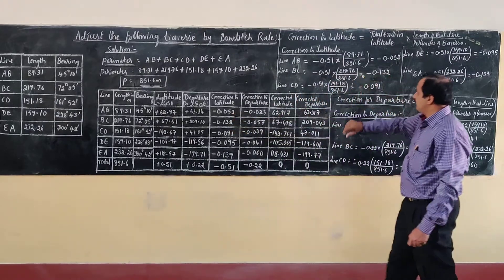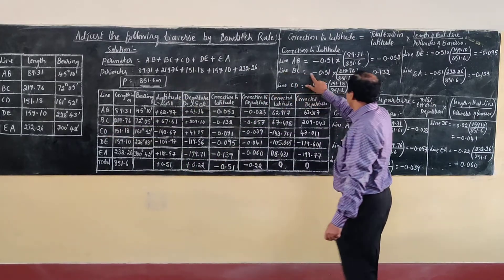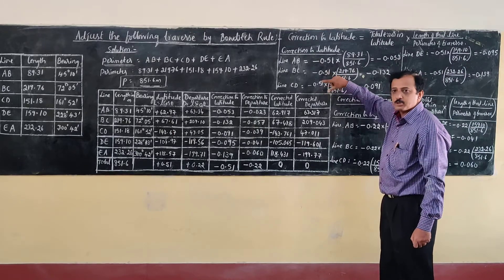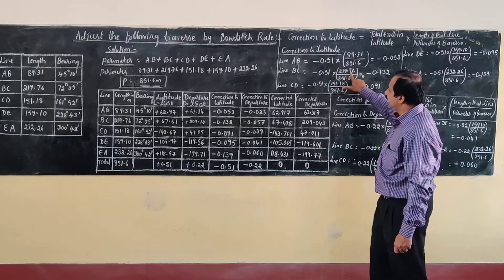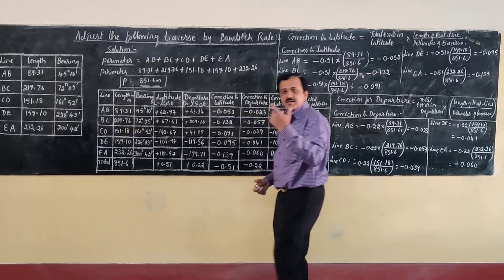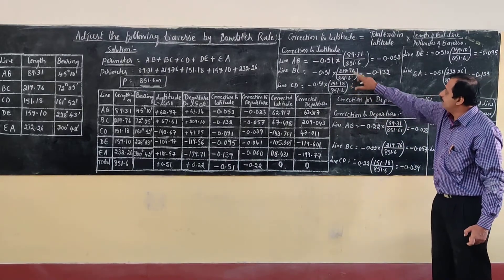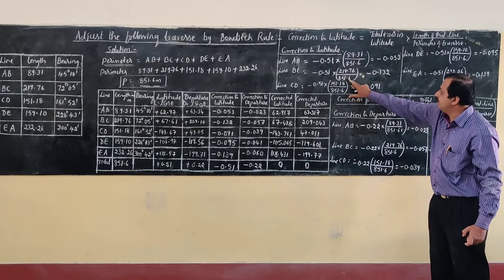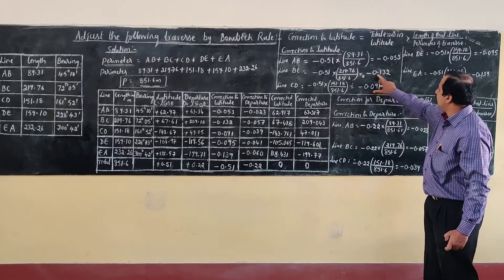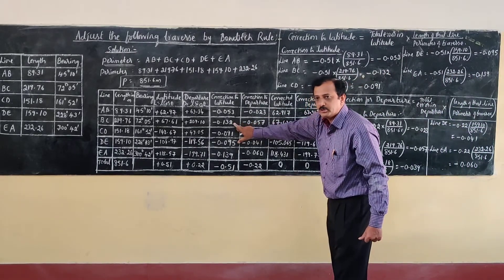Similarly, for line BC: correction to latitude = −0.51 × 290.76 / 851.6 = −0.132. Substitute that value of −0.132 as the correction to latitude for BC.